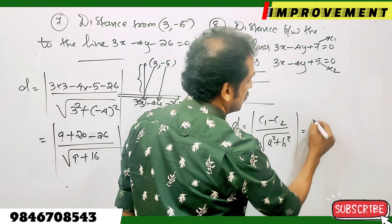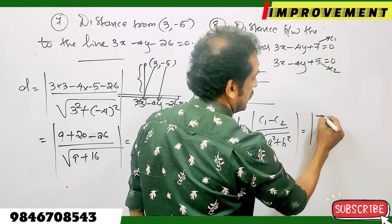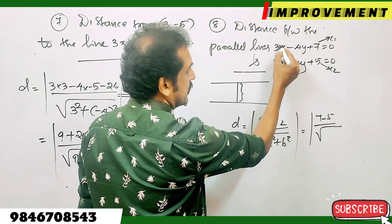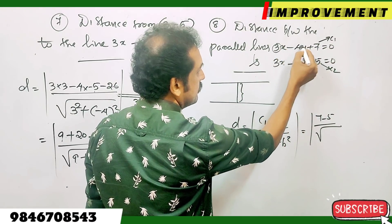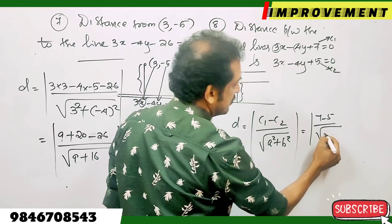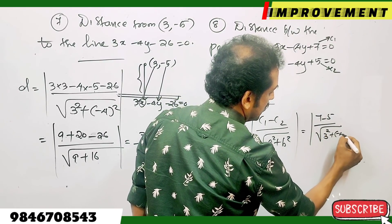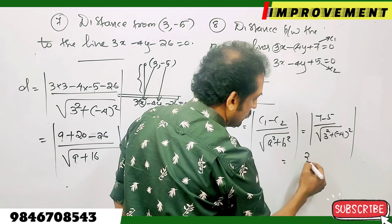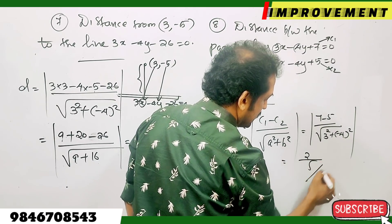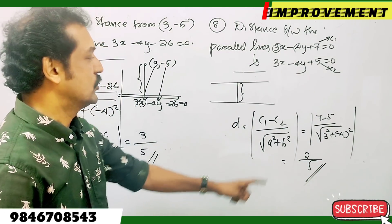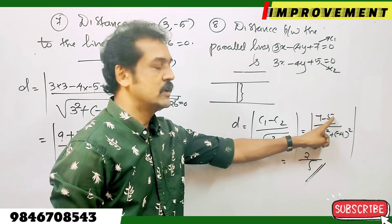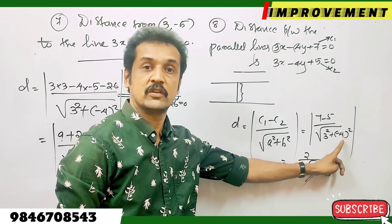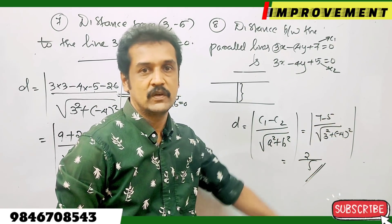C1 minus C2 is given. Distance equals C1 minus C2 divided by root of a squared plus b squared — that is root of 3 squared plus minus 4 squared. 7 minus 5 is 2, and root of 3 squared plus 4 squared is root 25, so the answer is 2 by 5.